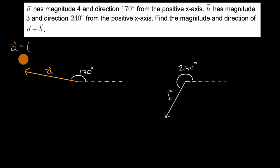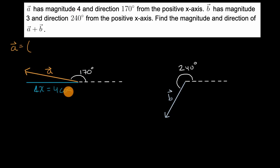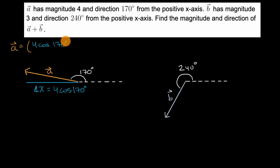For vector A, the x component — the change in x — is going to be the length times the cosine of the angle that the vector makes with the positive x-axis: cosine of 170 degrees. So the x component is four times cosine of 170 degrees.